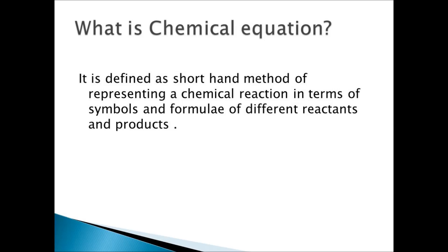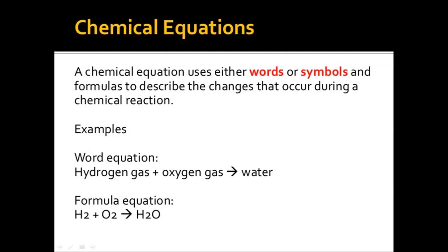The next topic is: what is a chemical equation? We can define it as a shorthand method of representing a chemical reaction in terms of symbols and formulas of different reactants and products. A chemical equation uses either words or symbols and formulas to describe the change that occurs during a chemical reaction.